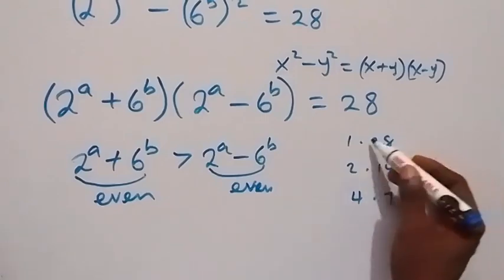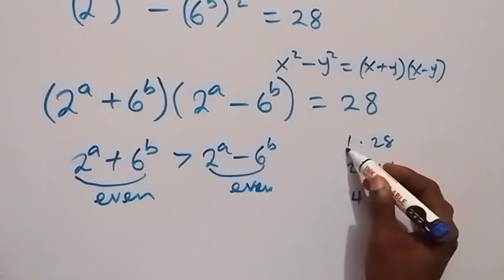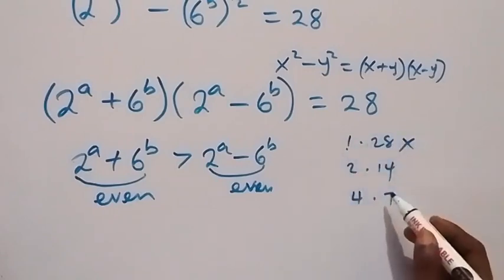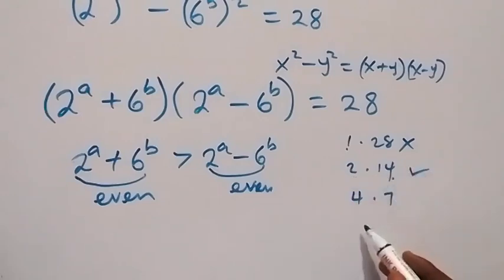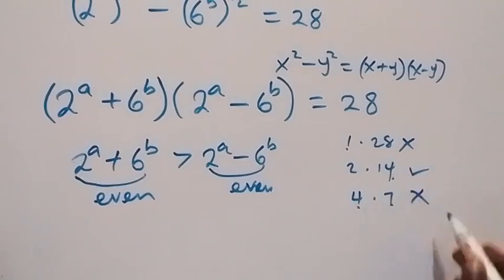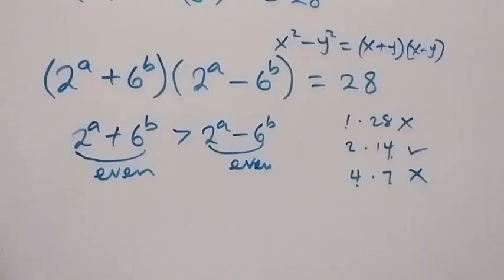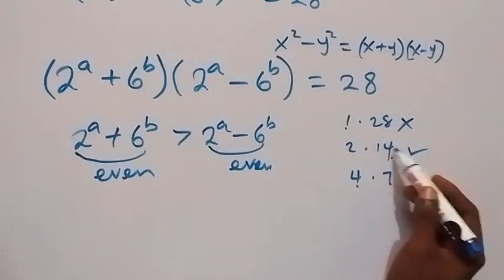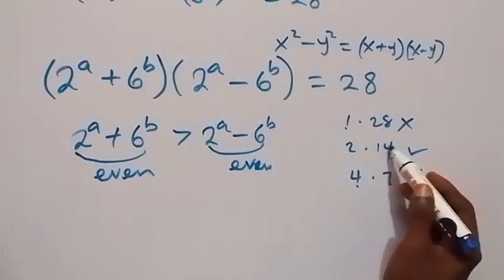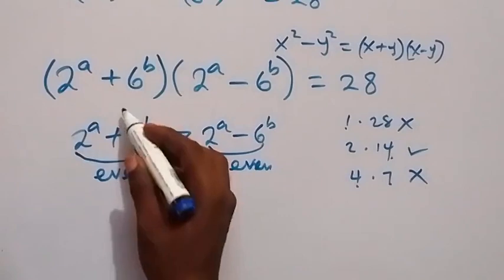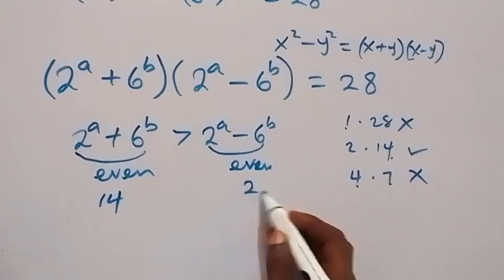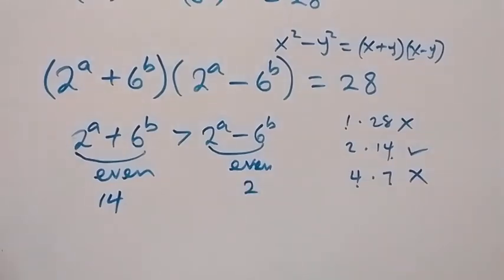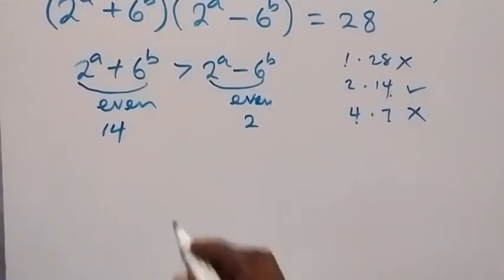Looking at the first case of 1 times 28: 1 is odd, so this will not work. For 4 times 7: 4 is even but 7 is odd, so this will not work either. Looking at the second case, the bigger factor is 14, so the first bracket equals 14 and the second bracket equals 2.